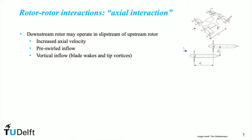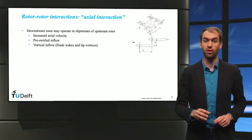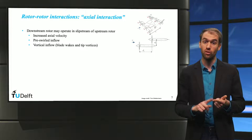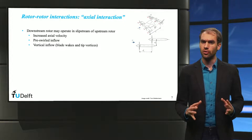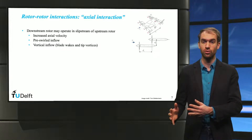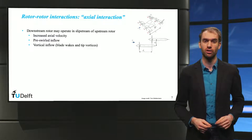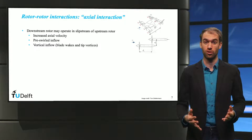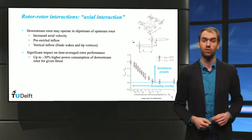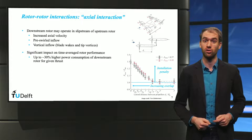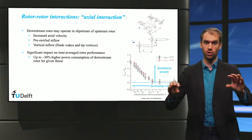For the axial interaction case, the dominant interaction is caused by the operation of a downstream rotor in the slipstream of an upstream rotor. The downstream rotor experiences a perturbed inflow characterized by increased axial velocity, non-zero tangential velocity, and vortical flow structures. Contrary to the lateral interaction case, for the axial interaction case, the inflow perturbation has a significant impact on the time-averaged rotor performance. The downstream rotor can suffer an increase in power consumption of up to 30% for a given thrust, depending on its location with respect to the upstream rotor.